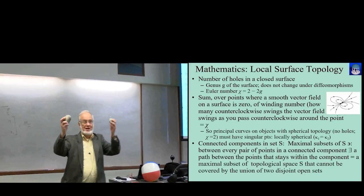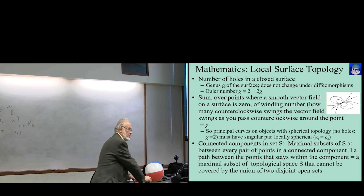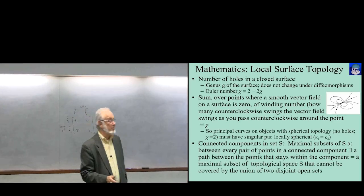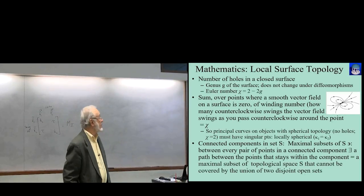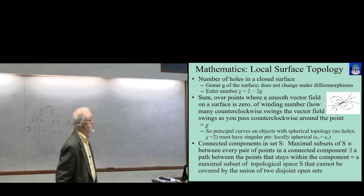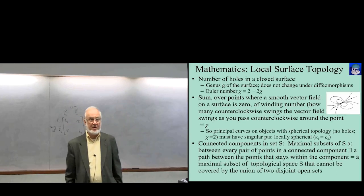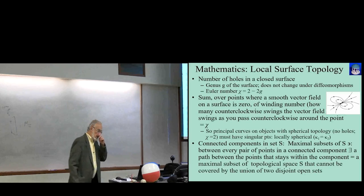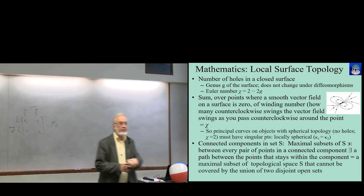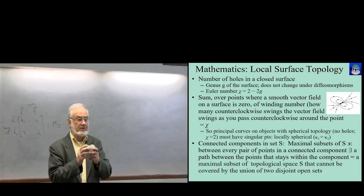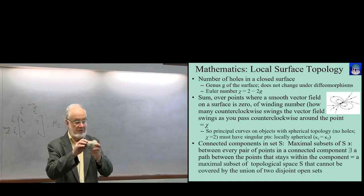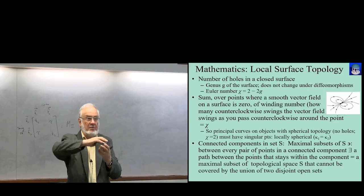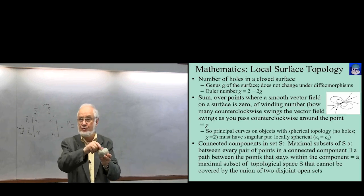Any of these objects I have in front of me have genus zero, but a donut has genus one, and a pretzel genus two. From the genus, there's another number denoted by the Greek letter chi, equal to two minus twice the genus. So for spherical topology, it's two. We're also going to be interested in vectors on the surface — for example, flow vectors when doing a diffeomorphism that moves things on the surface, or the principal directions as another example.